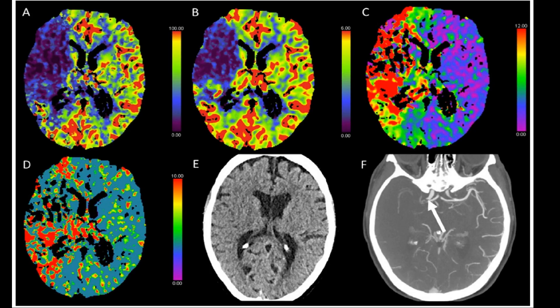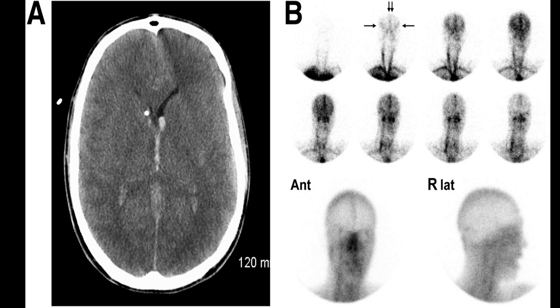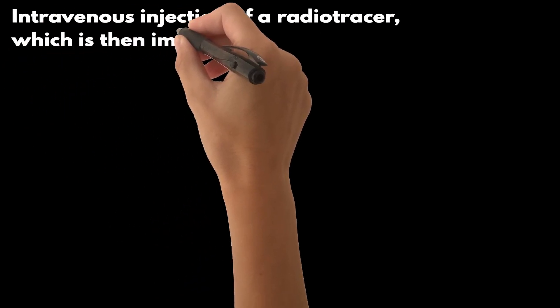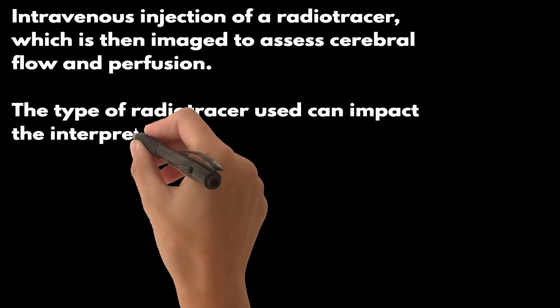Clinicians should be cautious about the clinical significance of residual flow, as it may not represent function. Let's delve into tests that measure cerebral perfusion. One such test is computed tomography perfusion, or CTP. This test evaluates blood flow parameters within brain tissue, offering a potentially more accurate estimate of cerebral perfusion. Preliminary results of a large multicenter trial suggest that CTP has higher sensitivity and specificity for DNC than CTA. Another method is radionuclide cerebral perfusion scintigraphy, which involves the intravenous injection of a radiotracer, imaged to assess cerebral flow and perfusion.